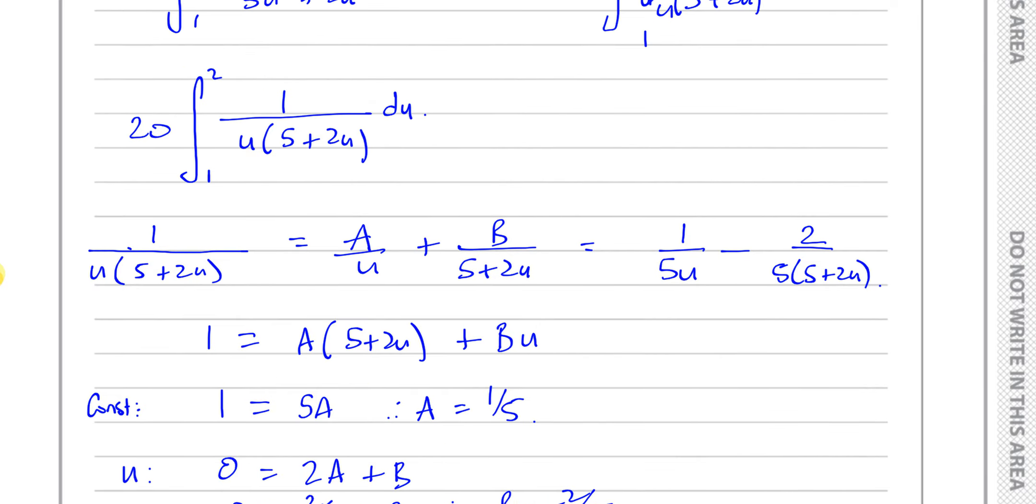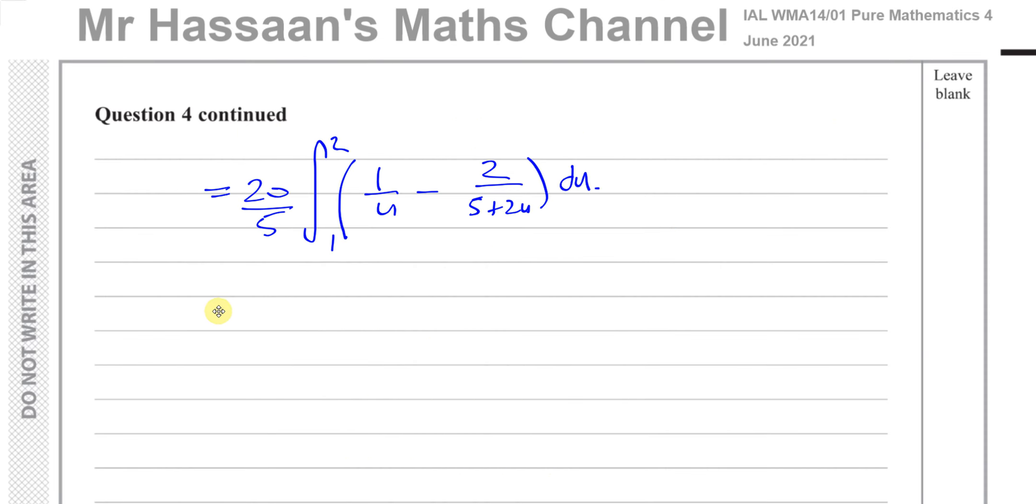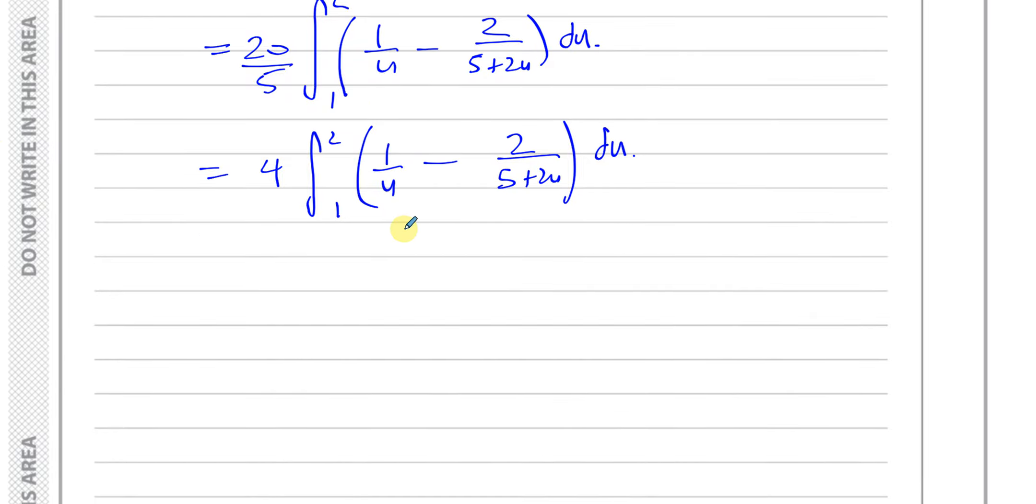Now I'm ready to integrate this. This is going to be written as 20 times 2 and 1 here. I can take out the 5 as common in the denominator. I'll have 1 over u minus 2 over 5 plus 2u with respect to u. I've taken out that 5, so that will now give me 4 times this. I'm going to take that to the next page and continue.